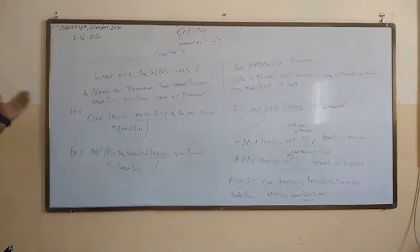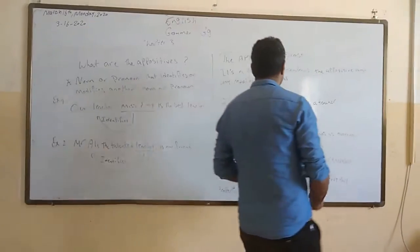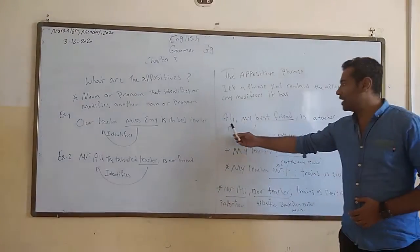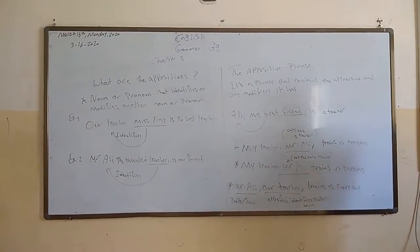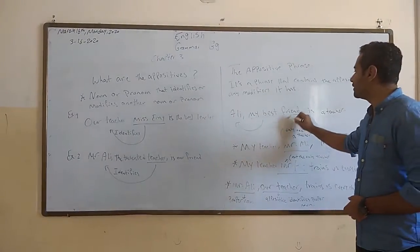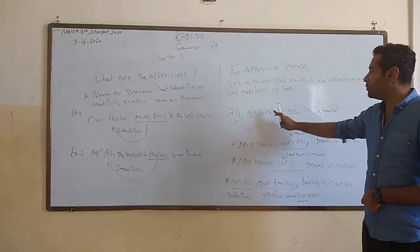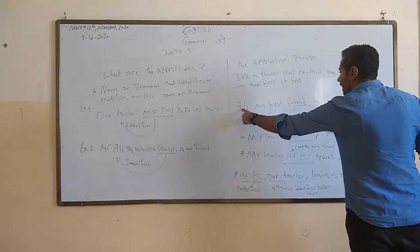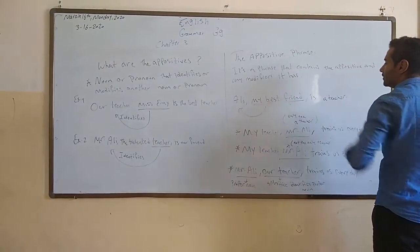Usually an appositive also has an appositive phrase. What is the appositive phrase? It is the phrase that contains the appositive. For example, 'Ali, my best friend, is a teacher.' What is the appositive here? It's 'friend.' What is the appositive phrase? It's 'my best friend.' And it identifies the noun 'Ali.' So that's the appositive phrase 'my best friend.'